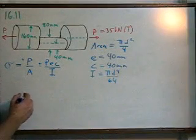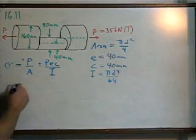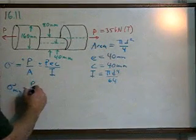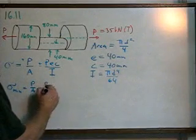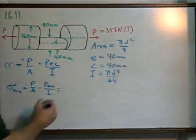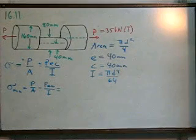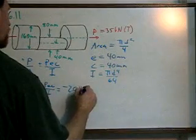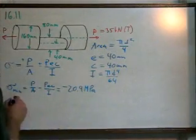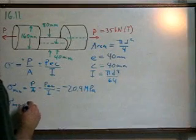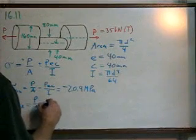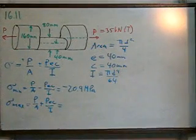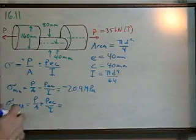Plugging all these in, the minimum stress will be P/A minus Pec/I, and ends up being negative 20.9 megapascals. And the maximum will be P/A plus Pec/I, and that would be 34.8 megapascals.